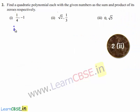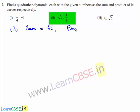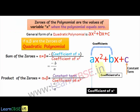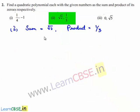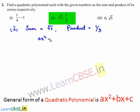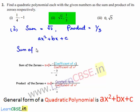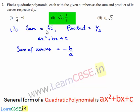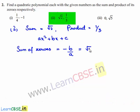Coming to the second part, the sum of the zeros given is √2 and the product is 1/3. Let us assume the required quadratic polynomial to be ax² + bx + c. We know that sum of zeros is equal to -b/a, and the given sum is √2, which can be written as √2/1. By comparing, we can say b = -√2 and a = 1.